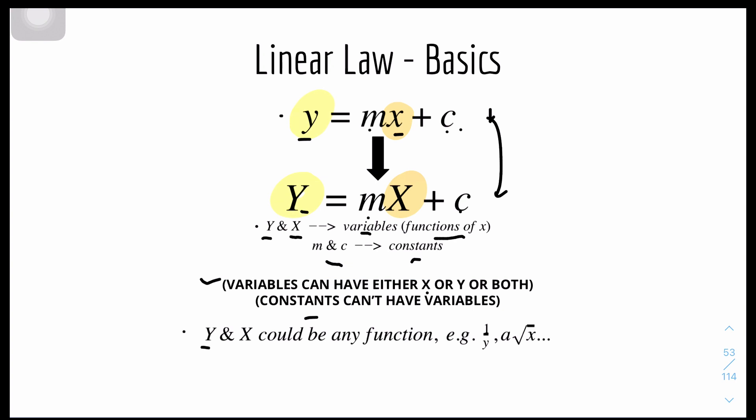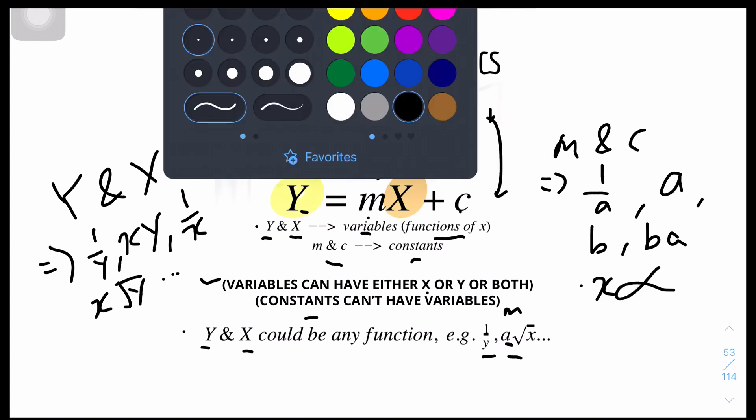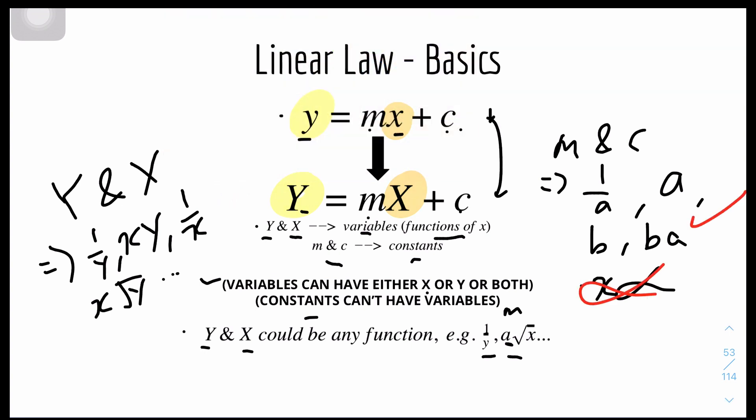For example, big Y and big X could have any variable function. For example, 1 over y, and root x. So basically big Y and big X could be any function with the variables x or y. So it could be 1 over y, xy, 1 over x, x root y or anything else. But m and c as constants can't have variables. So they could be 1 over a, a, b, ba, ab or so on. But it can't be x. You can't have this. This is correct and this is correct.